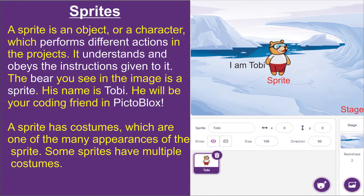A sprite can be anything — it can be a cat, it can be an apple. But by default in PictorBlock, we have Toby. A sprite has costumes, which are one of the many appearances of the sprite. Some sprites have multiple costumes.